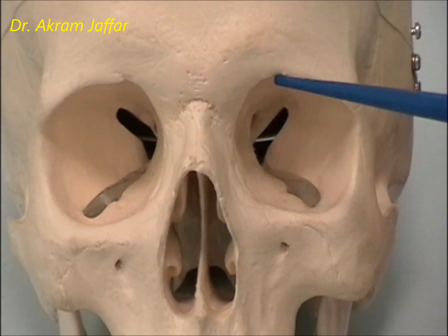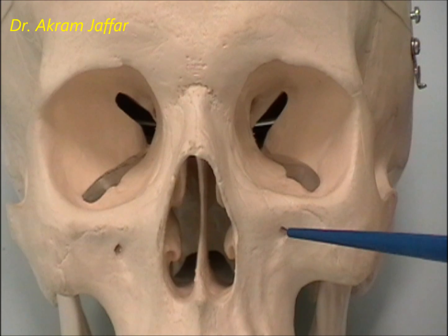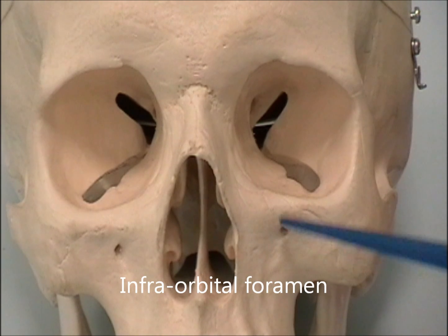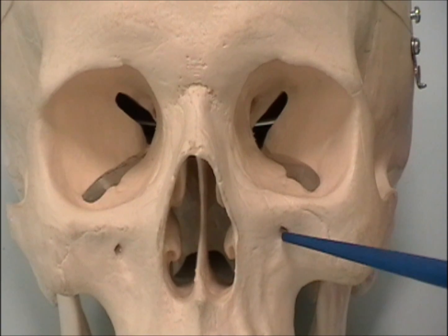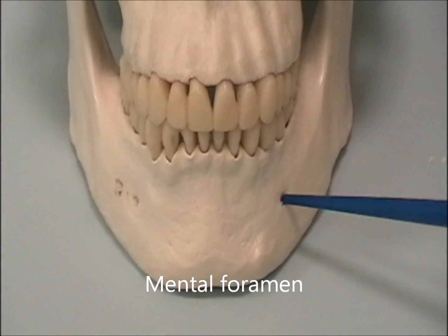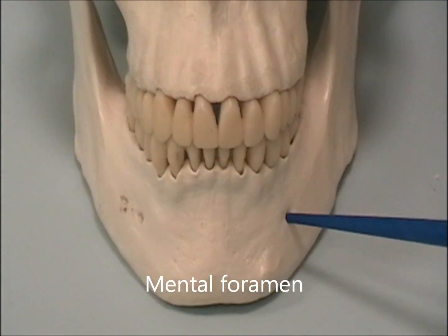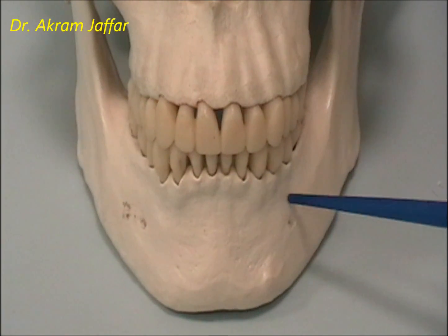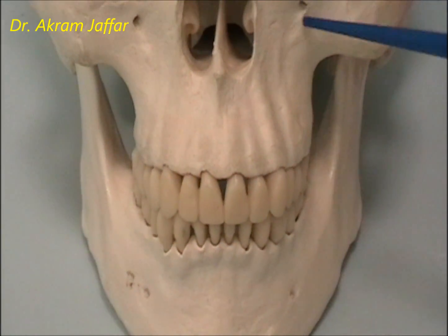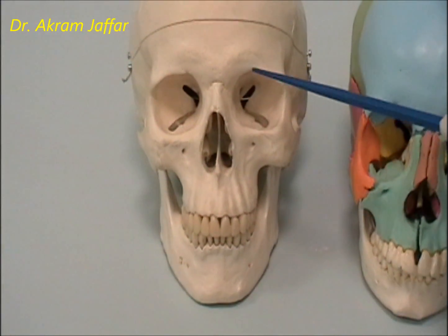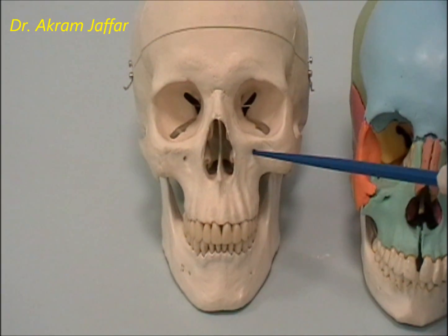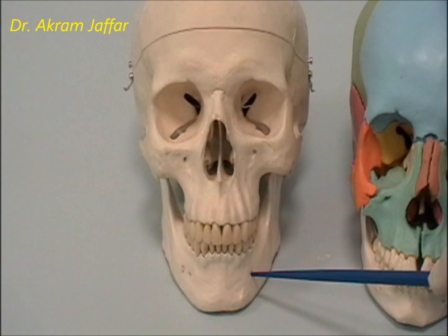The supraorbital foramen is located above the orbit, and in line with it is the infraorbital foramen, which is a foramen within the maxilla. The other foramen is the mental foramen, usually located level with the second premolar tooth. These three foramina lie in the same vertical plane and they transmit nerves and vessels of the same name: the supraorbital nerve and vessels, the infraorbital nerve and vessels, and the mental nerve and vessels.